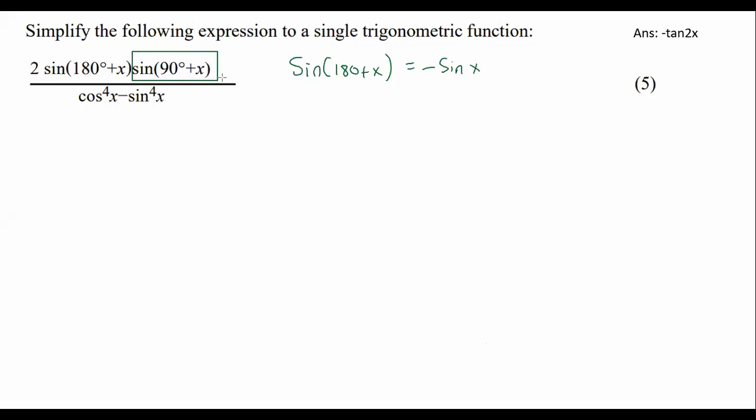This part over here, that is a co-function. Remember, there are four co-functions that we need to know from grade 11: sin 90 plus x, cos 90 plus x, cos 90 minus x, and the sin of 90 minus x. So those are the four co-functions that we know from grade 11.